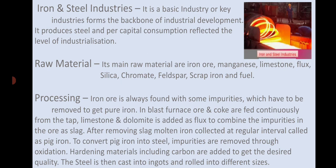After removing slag, molten iron is collected at regular intervals, called pig iron. To convert pig iron into steel, impurities are removed through oxidation. Hardening materials including carbon are added to get the desired quality. The steel is then cast into ingots and rolled into different sizes.